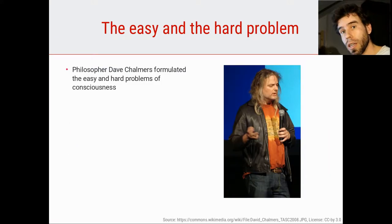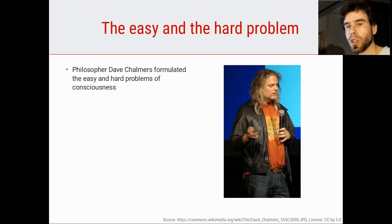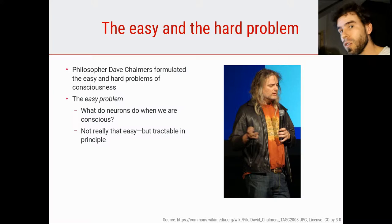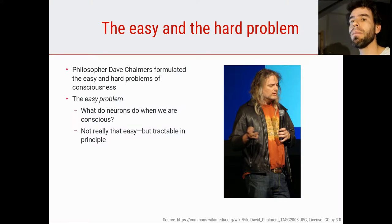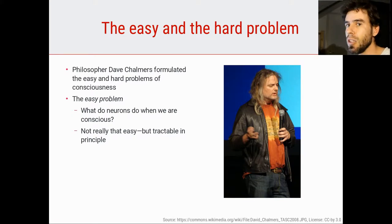A very important distinction often made in research on consciousness, especially by philosophers, is between the easy and the hard problem of consciousness. That was first proposed by Dave Chalmers. The easy problem of consciousness is basically the question: what do neurons do when we are conscious? This is a tractable problem. In principle, we could find out what neurons do when we are conscious of something. It is difficult because we don't have that level of neuroscientific insight yet, but it is conceivable that at some point we are able to answer it. So in that sense it is an easy problem, although only easy relative to the hard problem.